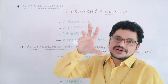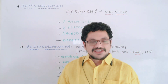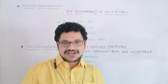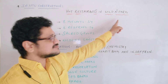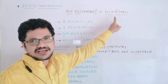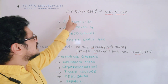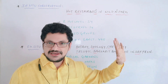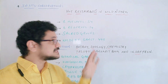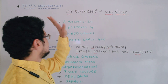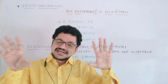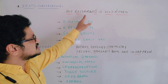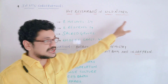Under in-situ conservation there are different types of techniques. In order to remember them, just use this simple mnemonic: 'Hot restaurants in wild national park.' This is a simple mnemonic to represent the in-situ conservation. No need to remember any long sentence — very simple.